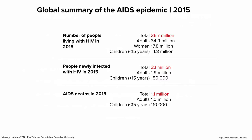Globally in 2015, almost 37 million people were living with HIV: 35 million adults, almost 18 million women, and 1.8 million children under 15 years of age — many infected at birth with no say in the matter. New infections in 2015: 2.1 million, including 150,000 children. Deaths in 2015: 1.1 million, including 110,000 children.